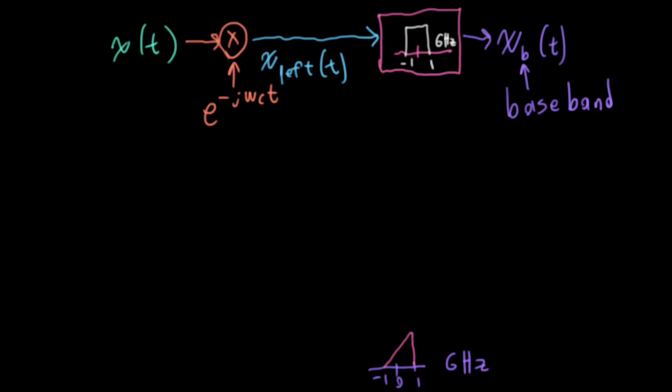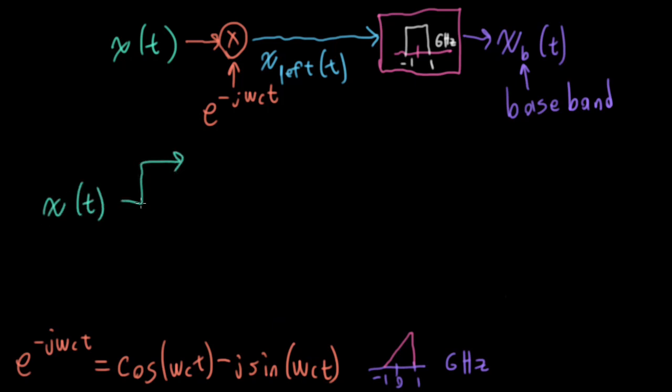Well, let's think for a second about what E to the minus J omega CT is. If I rewrite this with Euler's formula, I could write cosine omega CT minus J sine omega CT. And this works out because cosine is an even function and sine is an odd function. So when I plug the minus sign into cosine, it basically disappears. And when I plug the minus sign into the sine, the minus sign can be pulled out in front.